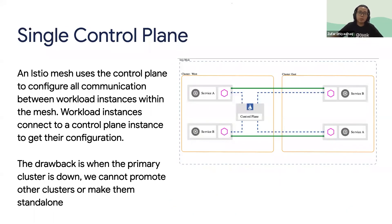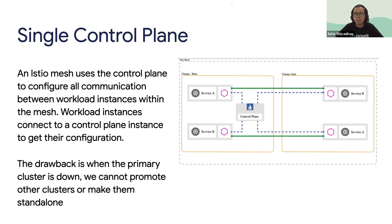You also have the control plane concept. In a single mesh setup, you can set up the control plane in each cluster — for example, in cluster west and cluster east. Or you can set up a centralized control plane in only a single cluster. The drawback is that when the primary cluster is down, you lose the control plane and cannot update the sidecar or gateway configuration.